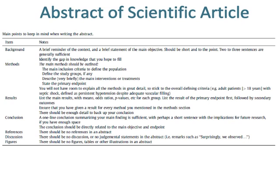There should be enough detail to back up your conclusion. The conclusion section requires only a one-line conclusion summarising your main finding, with perhaps a short sentence on the implications for future research. If you have enough space, the conclusion should be directly related to the main objective and endpoint. There should be no references, no discussion, no judgmental statements, no figures, tables, or other illustrations in an abstract.